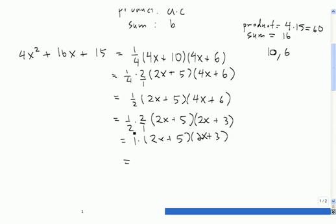Or simply, we don't want to have times 1 out in front. We want to write our final answer as 2x plus 5 times 2x plus 3. So the factored form of 4x squared plus 16x plus 15 is 2x plus 5 times 2x plus 3.